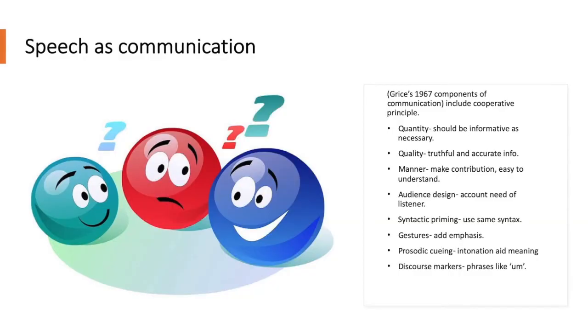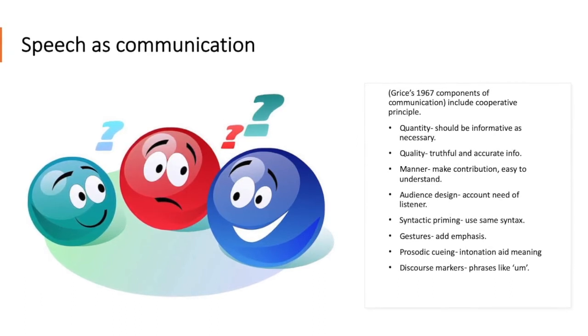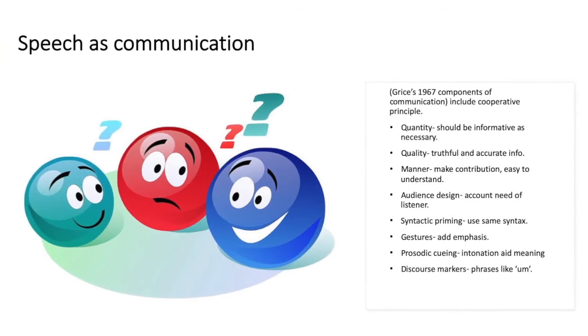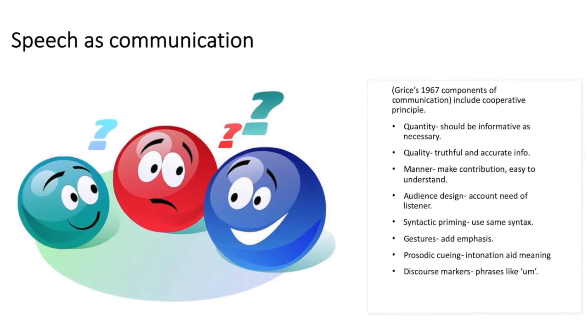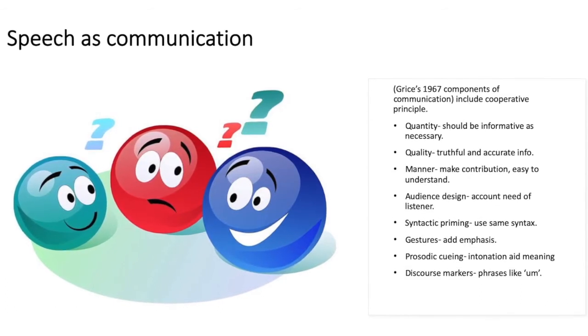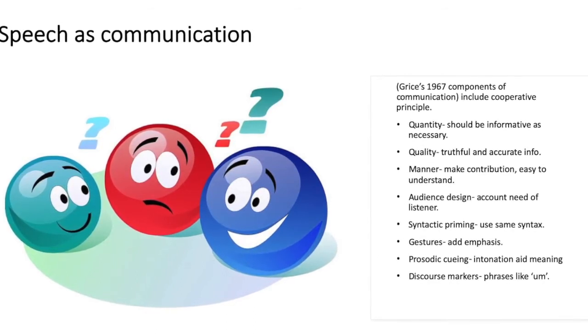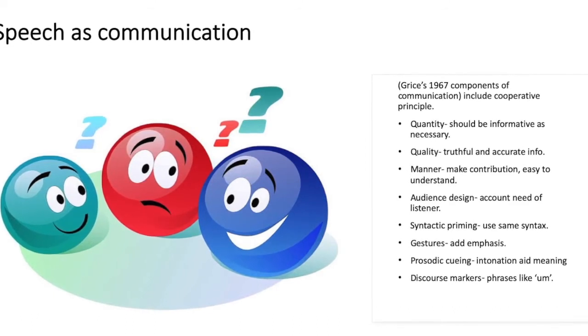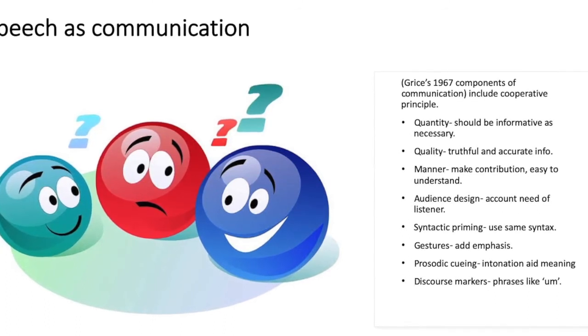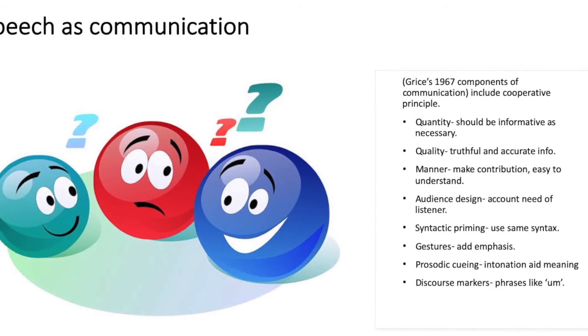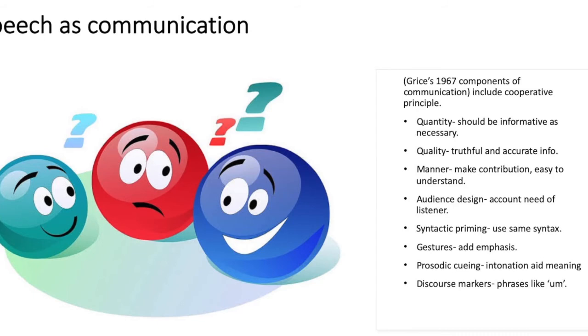Speech as communication. Grice's 1967 components of communication include cooperative principles, such as whether the speech conveys a certain quantity of information, a quality of information, as in how truthful and accurate that information is, the manner of information, so how it makes contributions, and how easy it is to understand, the audience design, so you have to account for the need of the listener. There is also syntactic priming, which is the use of the same syntax, as well as gestures, which add emphasis, prosodic cueing, which is intonation and adds meaning, and there's also discourse markers, which are phrases like um.